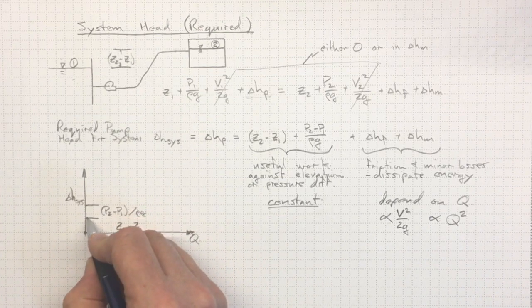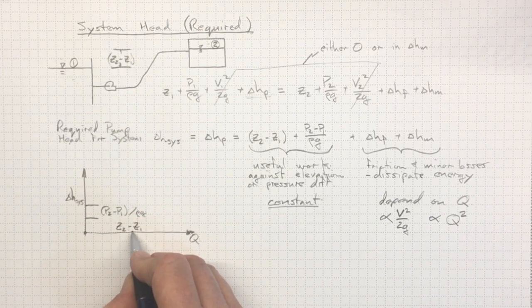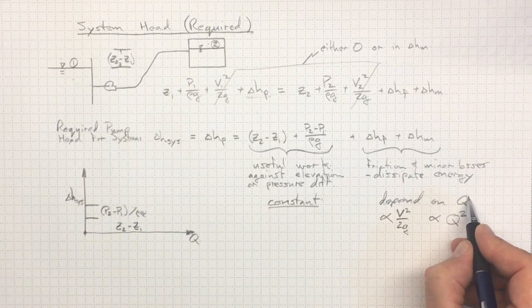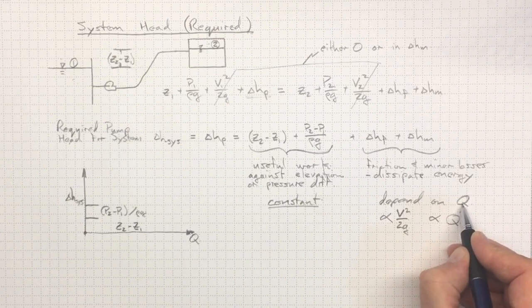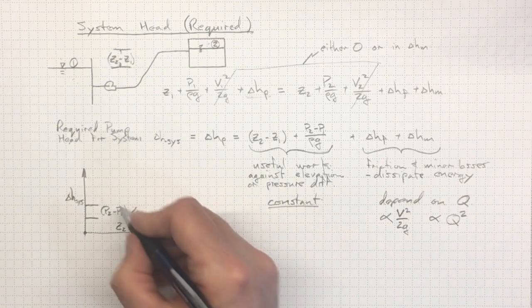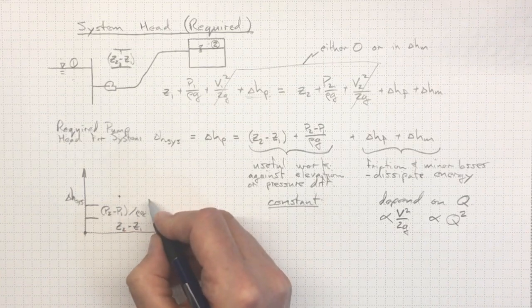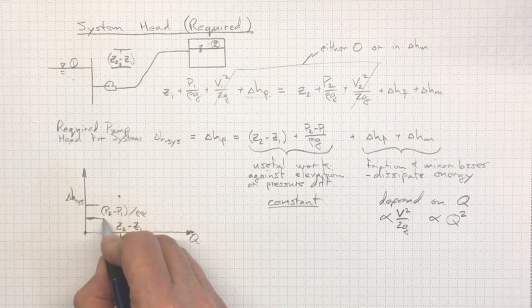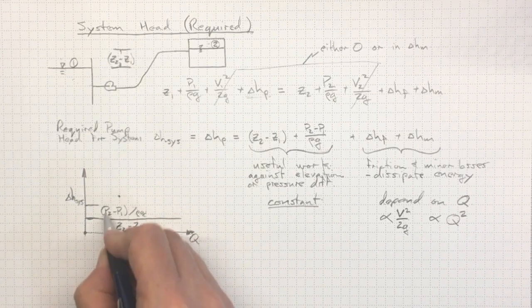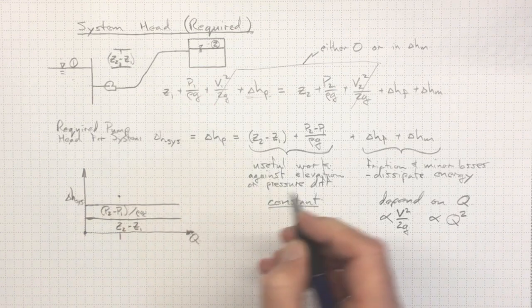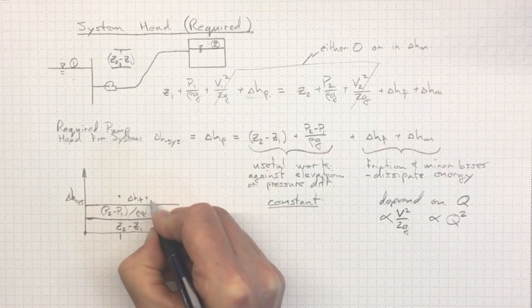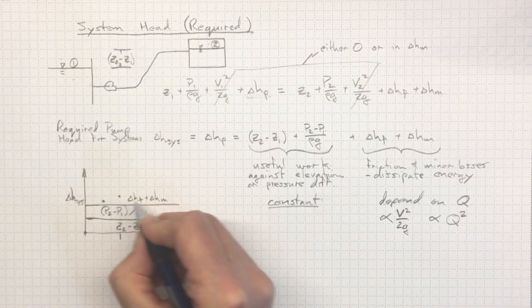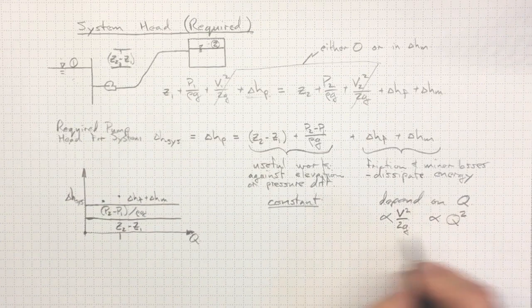If we don't have that much head rise across the pump, then there will be no flow. Now, if we have, in addition, some flow, there will be losses due to friction and minor losses. So, let's say we're up to here now at this flow rate. We've got an elevation difference, a pressure difference, and we've also got delta HF plus delta HM. It will be lower at low flow rates and it will go up as the square of the flow rate.